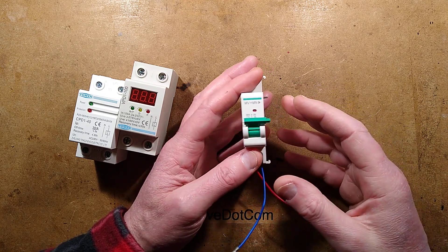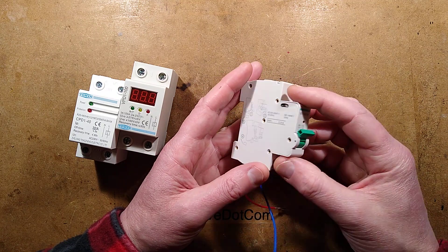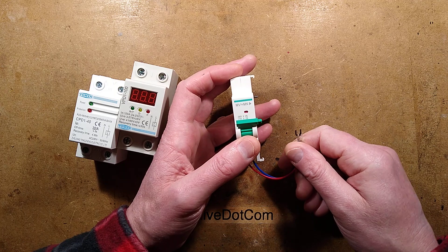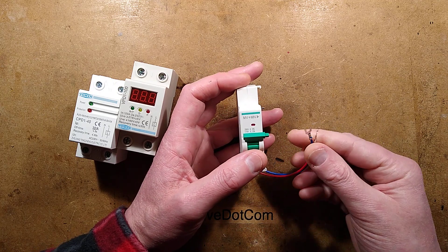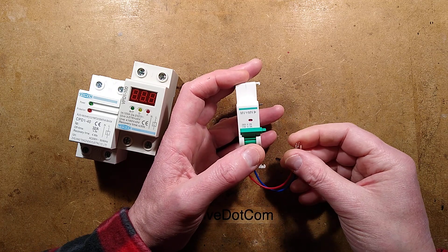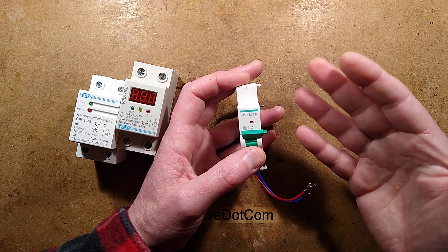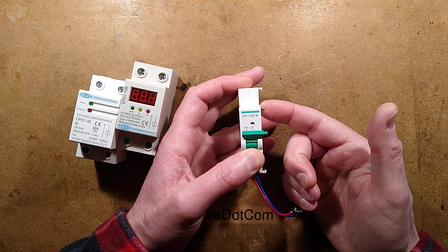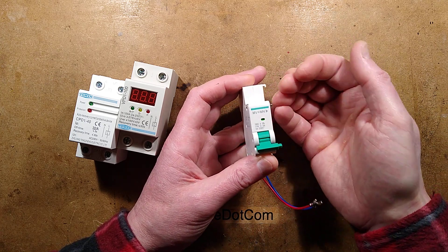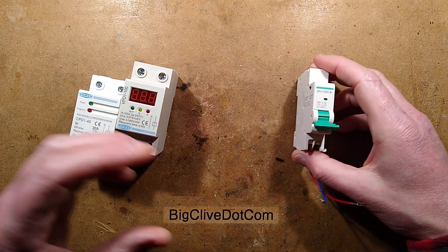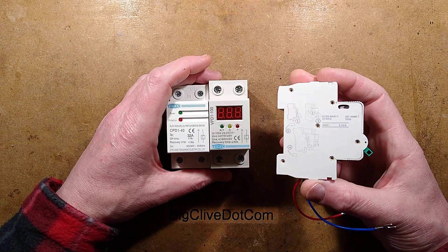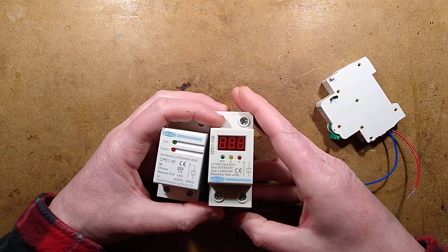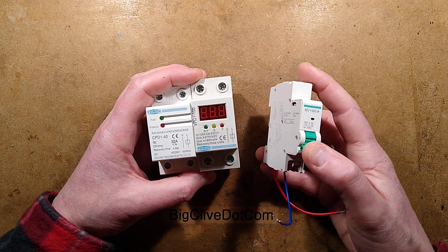It turns out that this is actually an overvoltage/undervoltage trip. This connects to the bottom of the circuit breaker and measures the voltage. If the voltage exceeds a certain margin or goes below a certain margin, it trips off and turns off the circuit breaker next to it.